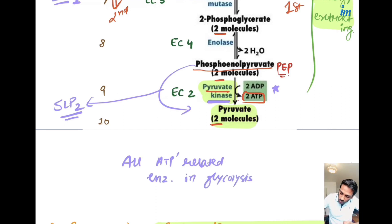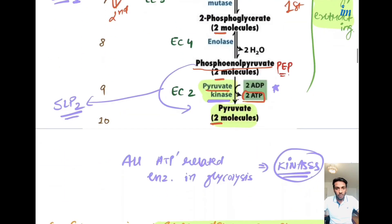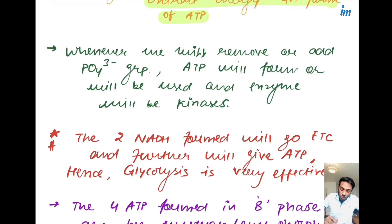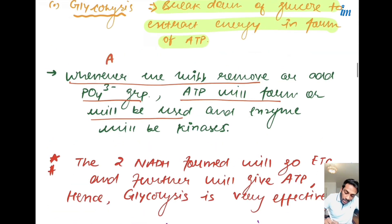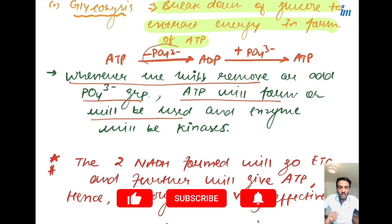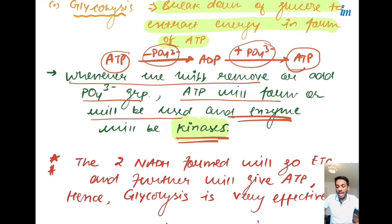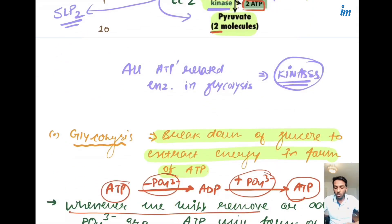All ATP-related enzymes in glycolysis are kinases. All four kinases are the same in respect to ATP but differ in their functioning, which we will discuss. Whenever we remove or add a phosphate group, ATP will be formed or used. If we take the phosphate group from ATP it converts to ADP; if we add a phosphate group to ADP it forms ATP. The enzymes responsible are kinases.